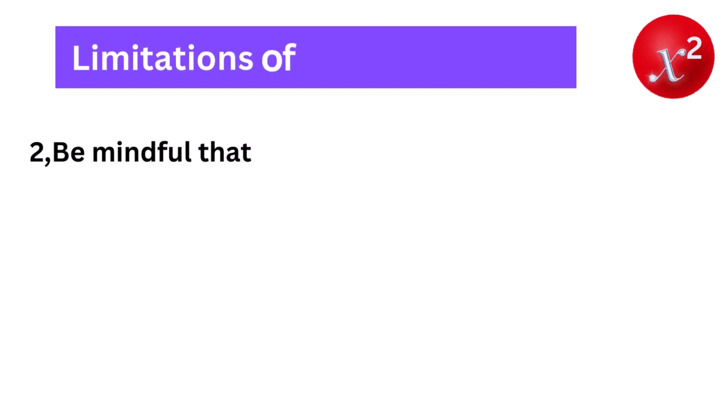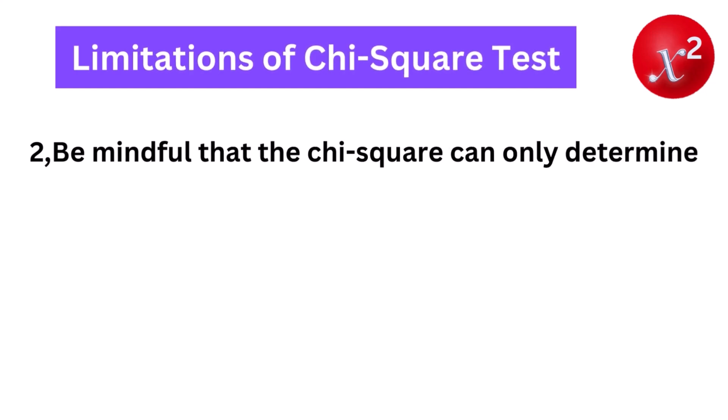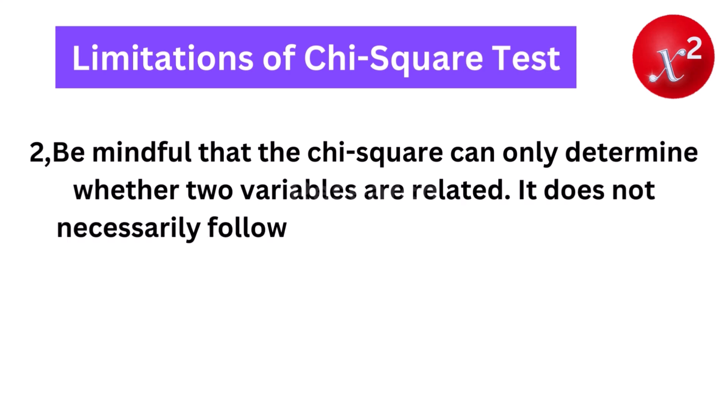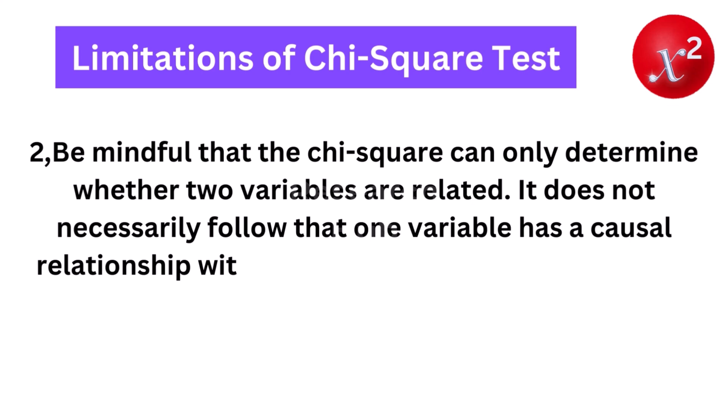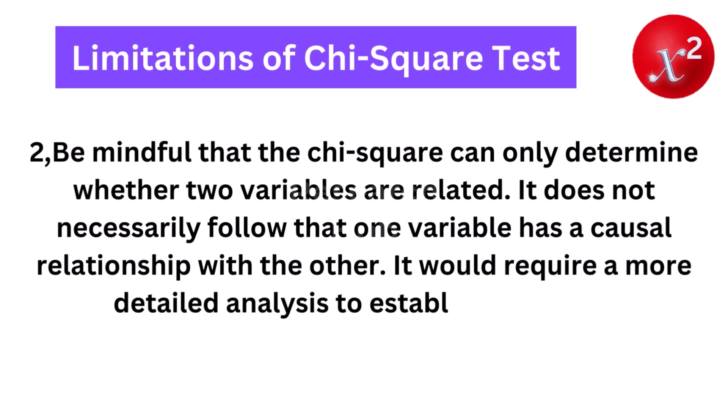2. Be mindful that the chi-square can only determine whether two variables are related. It does not necessarily follow that one variable has a causal relationship with the other. It would require a more detailed analysis to establish causality.